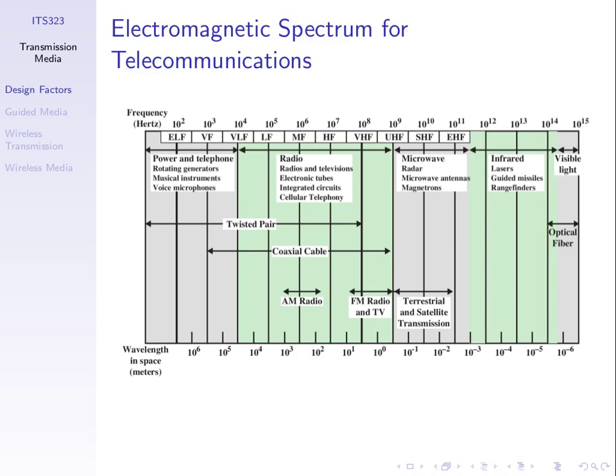Mobile phones - what frequency do they use? A common frequency is 2,100 MHz for 3G. Previously frequencies like 850 or 900 MHz were used. So mobile phones operate in the order of 1-2 gigahertz - 2,000 MHz being 2 GHz.